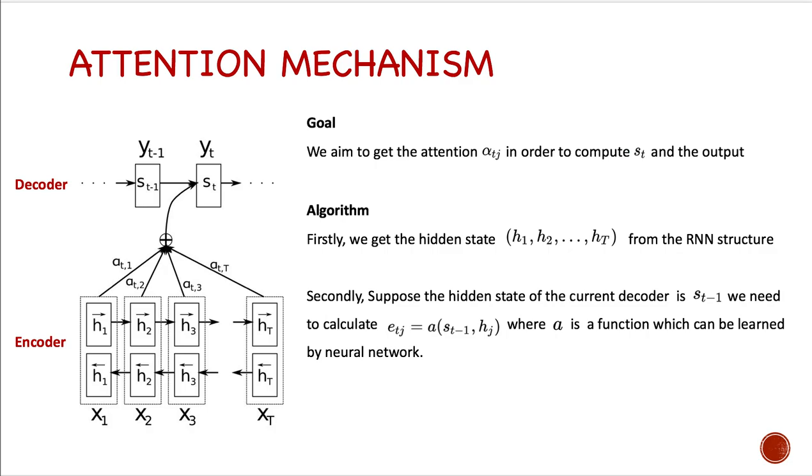Firstly, we get the hidden state H from the RNN structure. And secondly, suppose the hidden state of the current decoder is s_{t-1}. We need to calculate e_t,